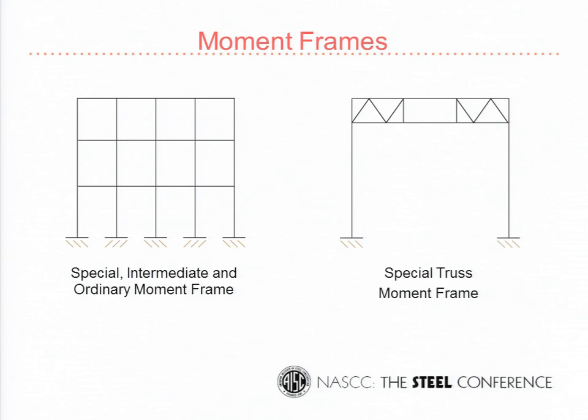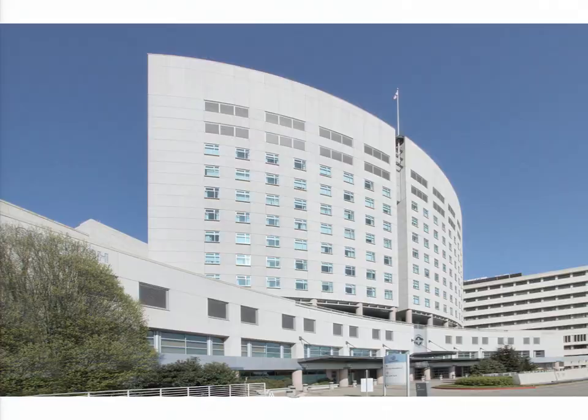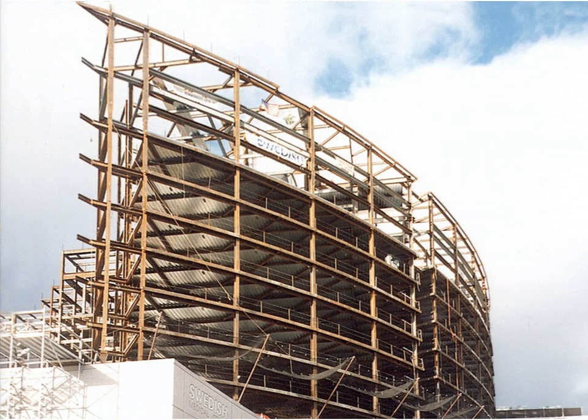We've had the luxury of designing special truss moment frames. Anytime you have a very long span — say 40 or 50 feet — a regular special moment frame just isn't going to cut it; it's too soft and drifts too much. A deeper truss system is a better way to go. They're used so infrequently I won't spend much time on this, but for a very long span moment frame where you want architectural openness and flexibility, it's not a bad option.